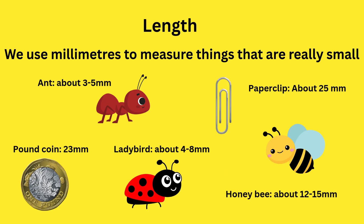We use millimeters to measure things that are really small. An ant is about 3 to 5 millimeters. A paperclip about 25 millimeters. A ladybird about 4 to 8 millimeters. A pound coin is 23 millimeters. And a honeybee is about 12 to 15 millimeters.